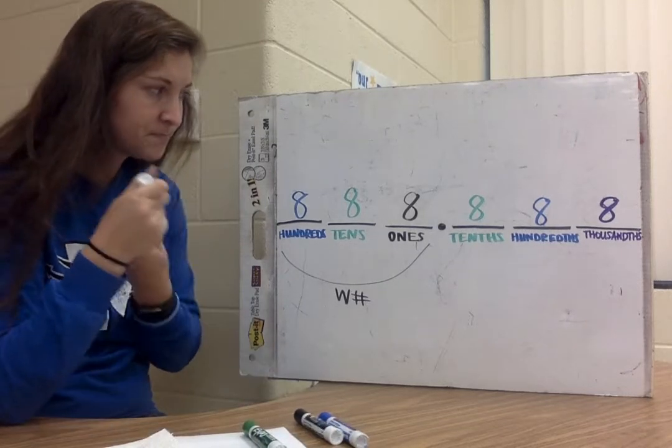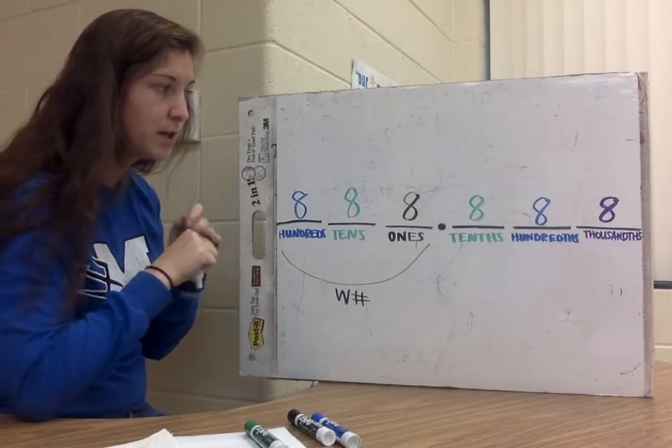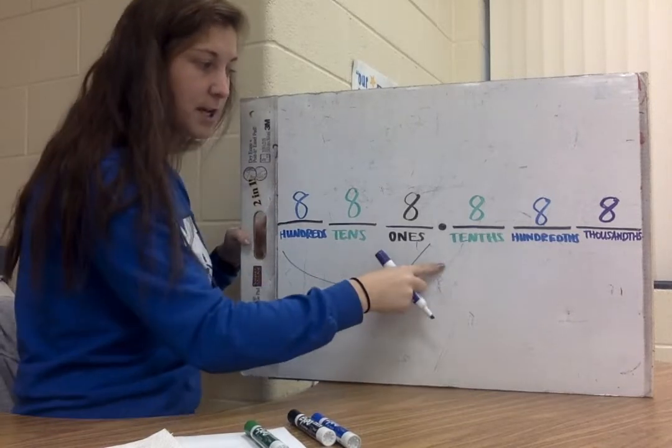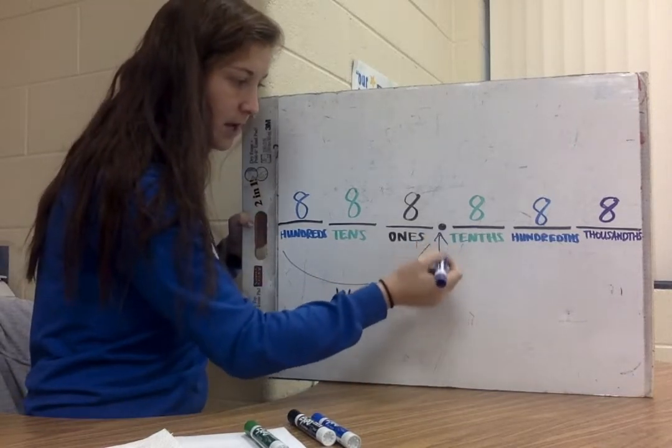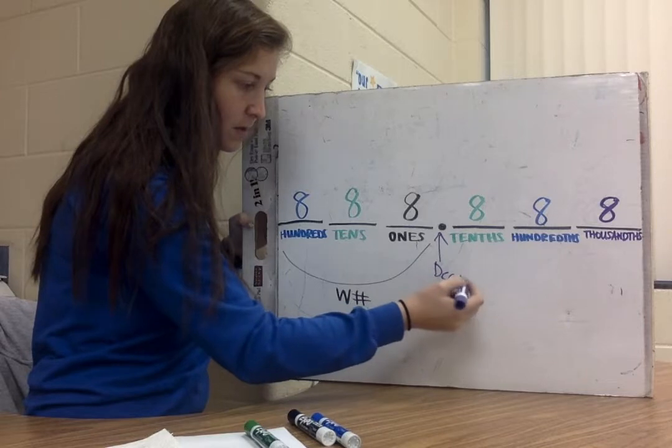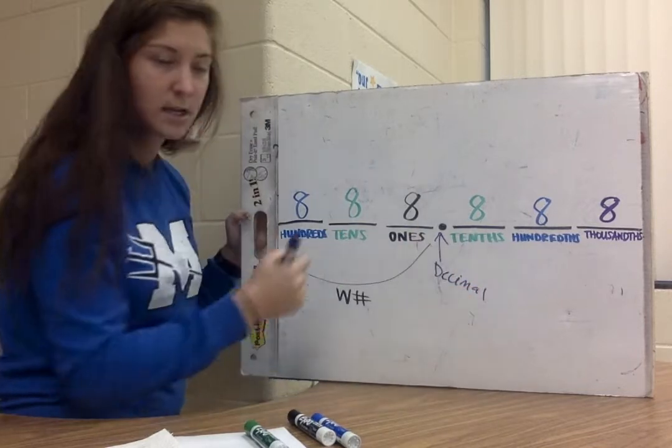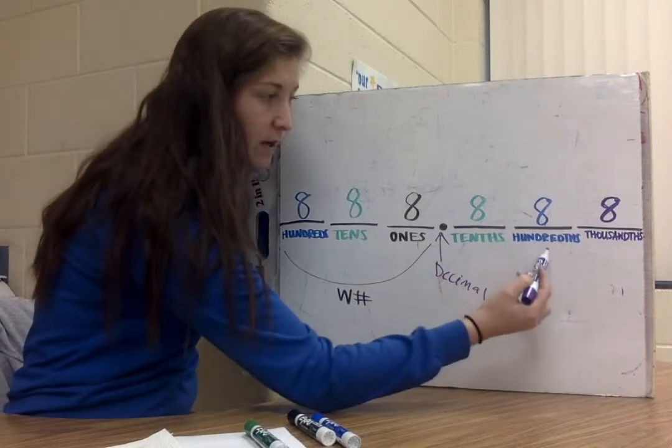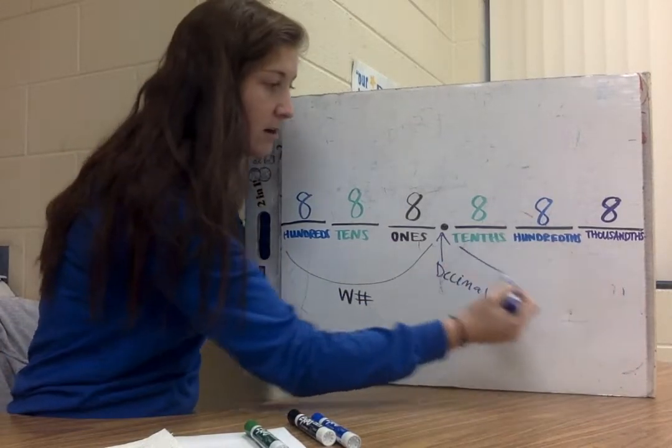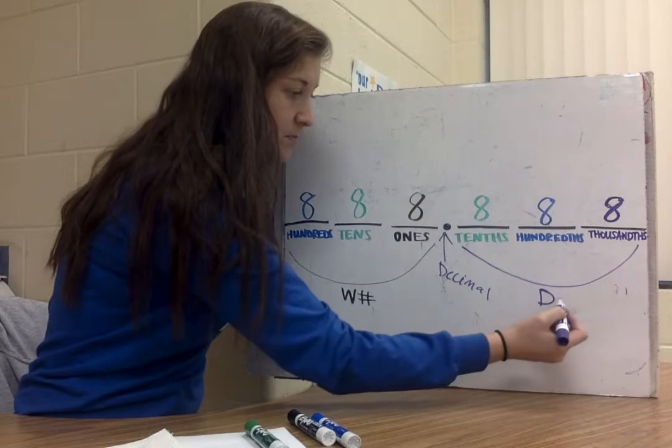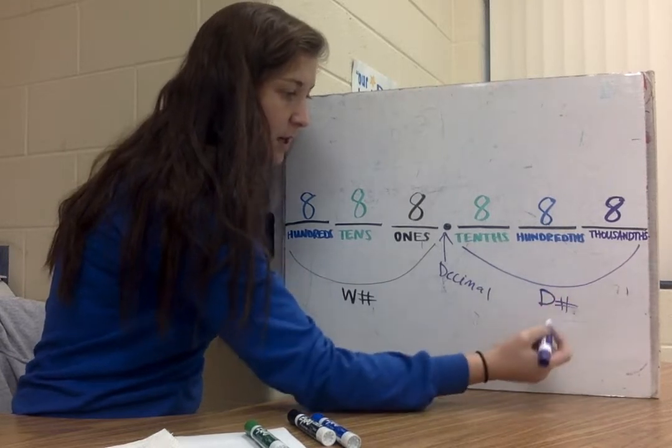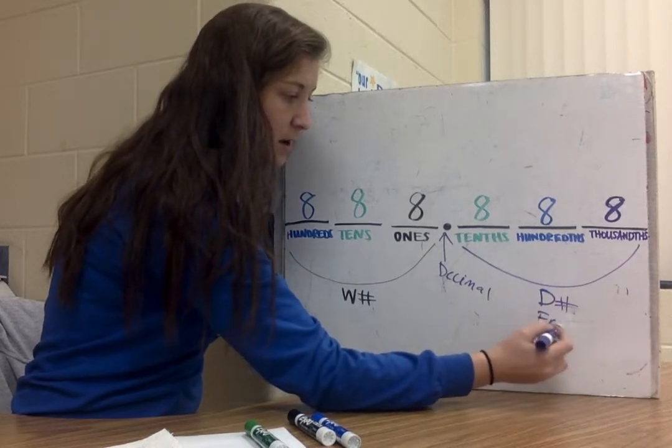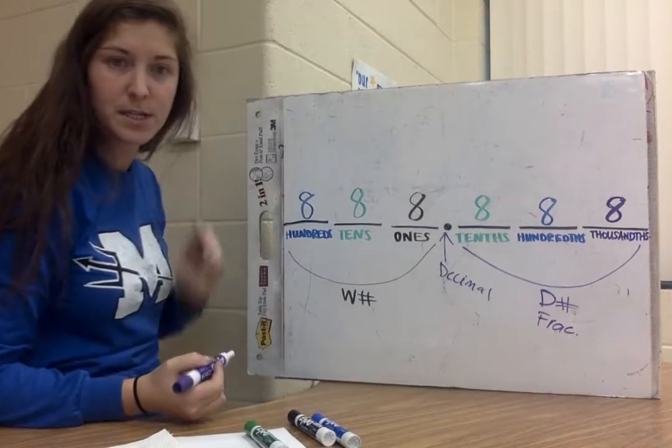Over here to the right of our decimal, obviously here we have our decimal. We have what's going to be our decimal numbers or our fractional pieces, either one. But we have our tenths, we have our hundredths, and we have our thousandths. So I'm going to abbreviate that as decimal number, and I can also write fractional pieces there as well.